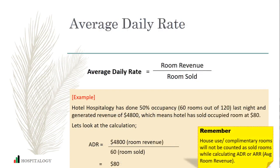The next one is Average Daily Rate, or ADR. There are many who call it ARR — Average Room Revenue — but the formula remains the same: room revenue divided by rooms sold. We calculate ADR to understand what is the revenue generated from an occupied room on a particular day.